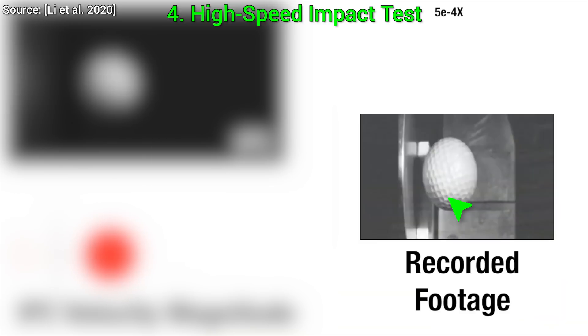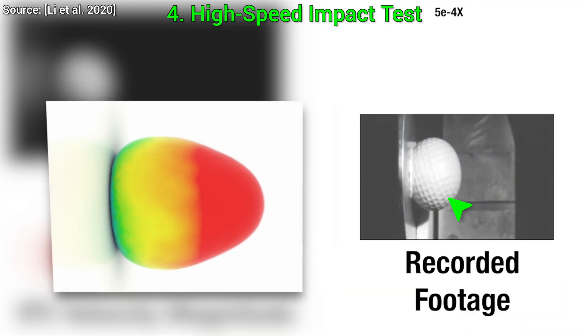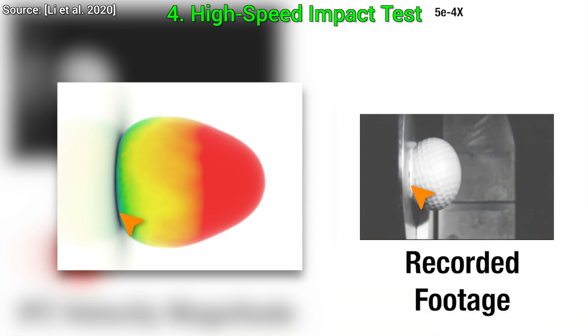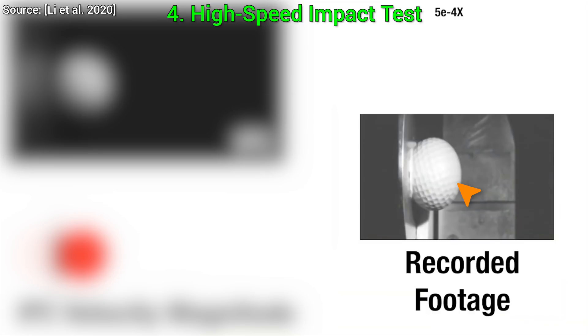Experiment number four: the high-speed impact test. Here is the real footage of a foam practice ball fired at a plate. And now, at the point of impact, this part of the ball has stopped, but the other side is still flying with a high velocity. So, what will be the result? A ton of compression.